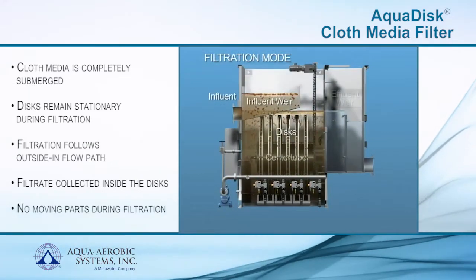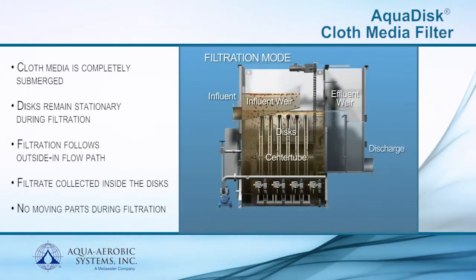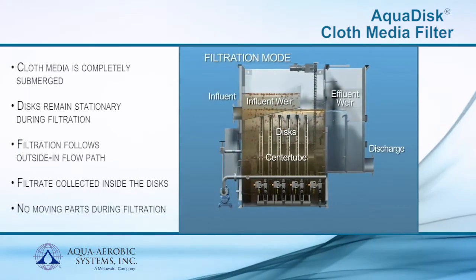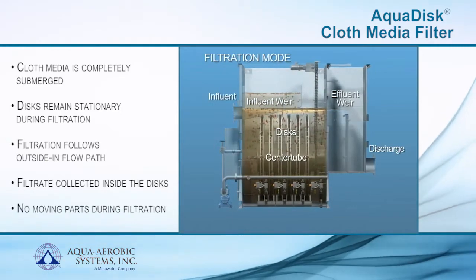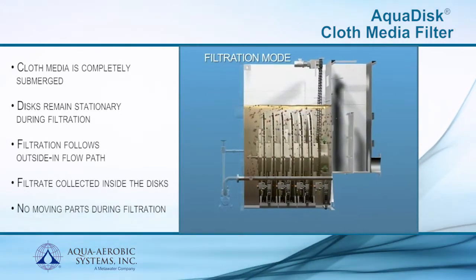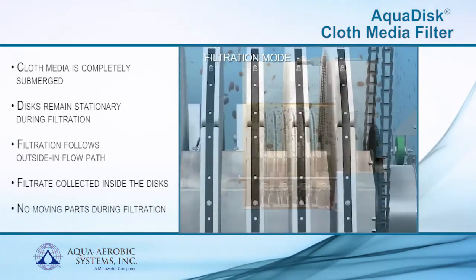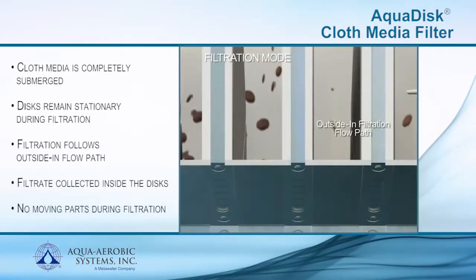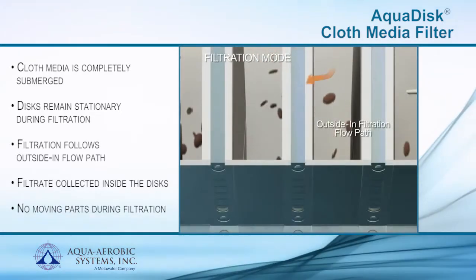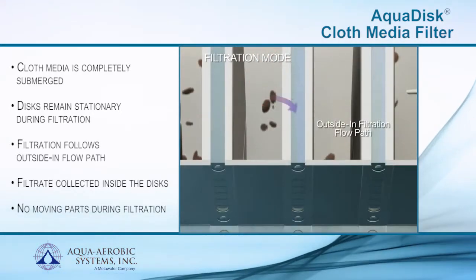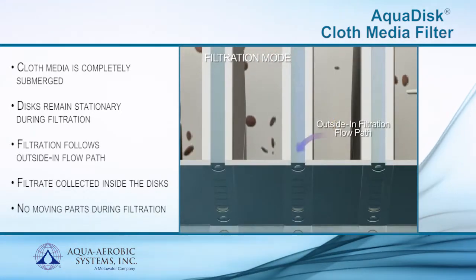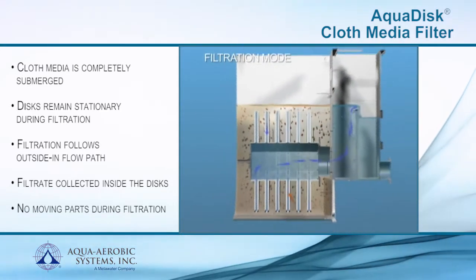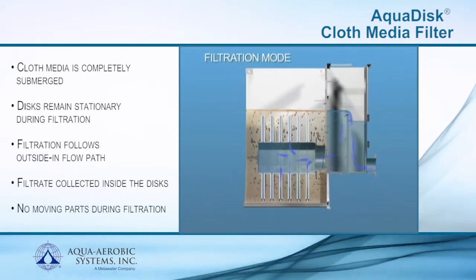During filtration, wastewater enters the filter tank by gravity, flowing over the influent weir and completely submerging the static cloth media discs. As influent passes through the cloth on both sides of each disc, solids accumulate on the media and a mat is formed. Filtrate is collected in the center tube, then directed to the effluent chamber and over the effluent weir.